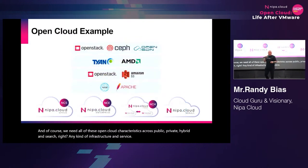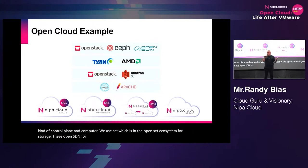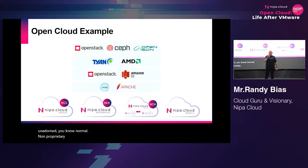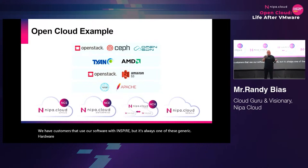What does this look like? Well, at NIPA, this is what it looks like. We use OpenStack for our cloud control plane and compute. We use Ceph, which is in the OpenStack ecosystem, for storage. We use OpenSDN for networking. We use Tyan and AMD for our servers — unadorned, normal, non-proprietary boxes. We have customers that use our software with other generic hardware systems as well.